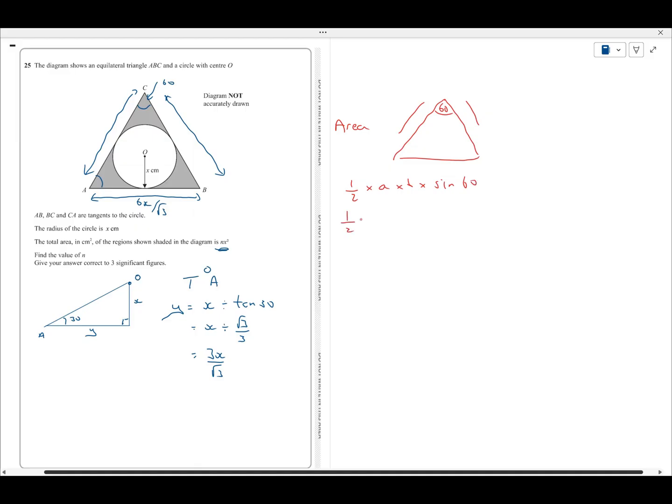So, that's going to be a half times 6x over root 3 times 6x over root 3 times sine of 60. Do that on my calculator. Sine of 60 is root 3 over 2. So, I can do some simplifying here. On the top, I'm going to have 36 root 3 times by x squared over 2 times 2 is 4 times 3 is 12. So, look at that. The 3, by the way, was root 3 times root 3 to give me 3. So, the area of the whole triangle is 3 root 3 times x squared.